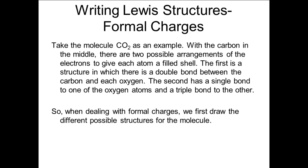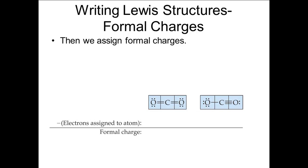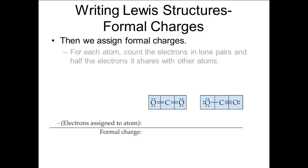To determine the formal charge of each structure, we first draw each of the structures. To assign the formal charge, we count the number of electrons assigned to each atom. For each atom, count the number of unshared electrons on the atom, then add half the number that are being shared. In the left structure, each of the oxygen atoms has two unshared pairs and two from the double bond, for a total of six electrons. The carbon has two from each double bond, for a total of four electrons.